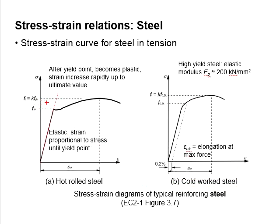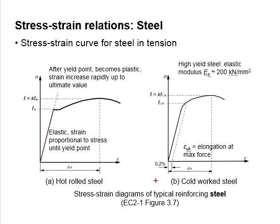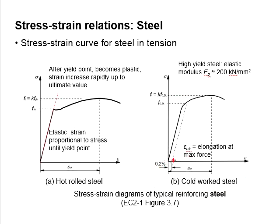The sharp turning point represents the yield point of the hot-rolled steel. In order to determine the yield strength of the cold-worked steel, you need to draw an offset line at 0.2% strain.